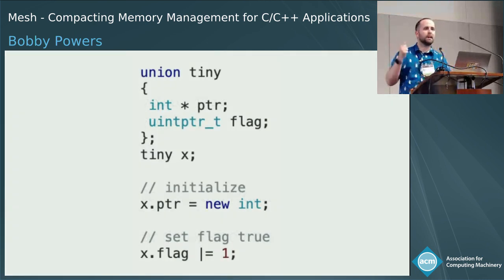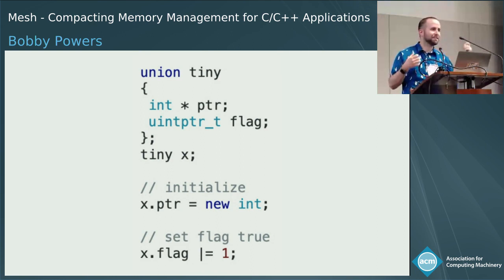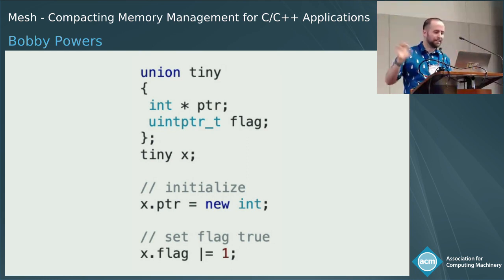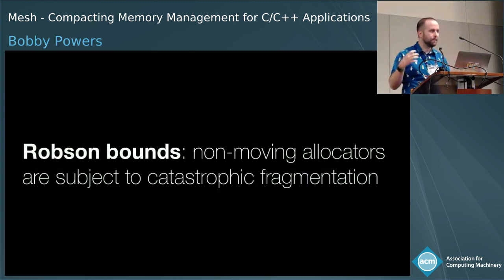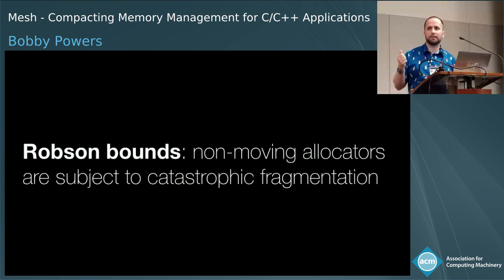This is why garbage collectors for C in the past, like the Boehm GC, are both conservative and non-moving. But this isn't just a lack of type information at runtime — C and C++ let programmers do lots of creative things like store flags in the low bits of aligned addresses. In addition to these implementation challenges, we have strong theoretical results showing that non-moving allocators are subject to catastrophic fragmentation in the worst case.